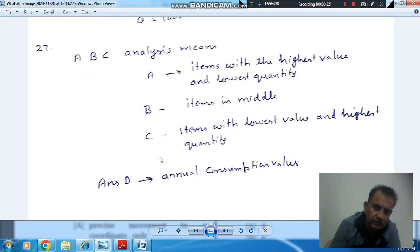So the answer is option D. Here, ABC analysis means: A - items with the largest value and lowest quantity, B - items in the middle with medium value and medium quantity, and C - items with the lowest value and highest quantity.